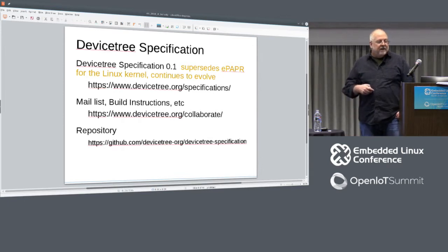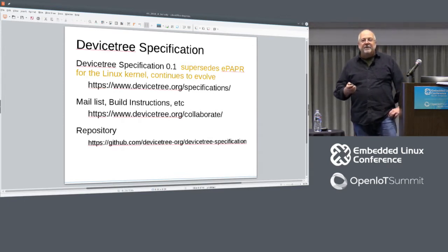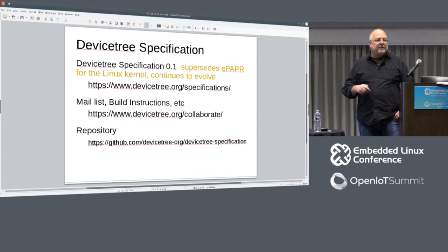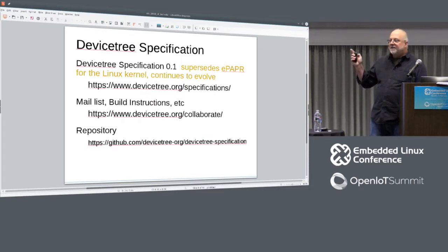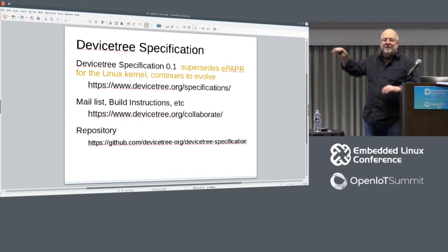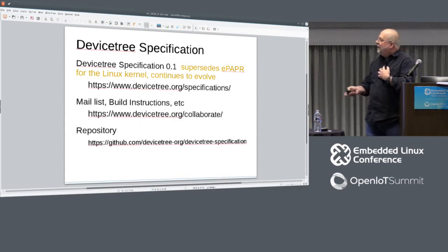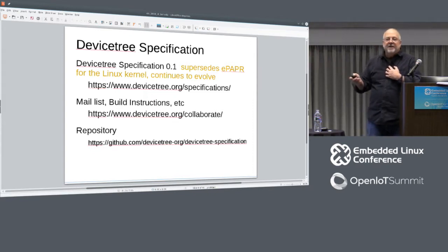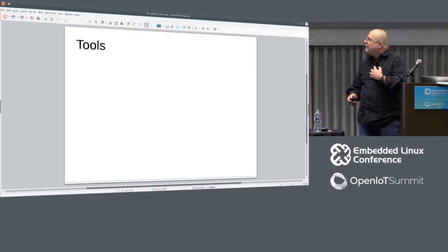The Device Tree specification was released a little over a year ago at version 0.1, and version 0.2 followed quickly. The significance is that we no longer use ePAPR as our specification for what Device Tree is supposed to be. This is essentially a cut-and-paste of ePAPR with some cleanups, and it's going to be evolving. The specification group meets regularly and it's actually maintained in a repository, so you can see how it's being edited and changing. You can actually participate in that process by submitting changes on the mailing list.